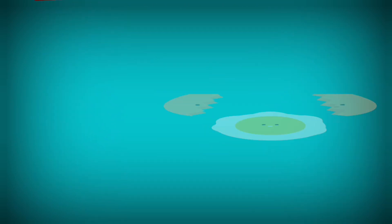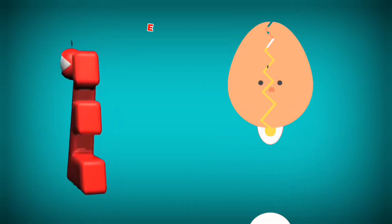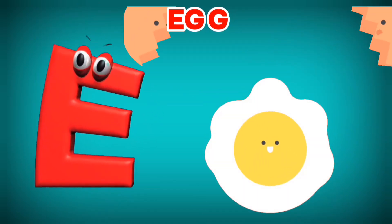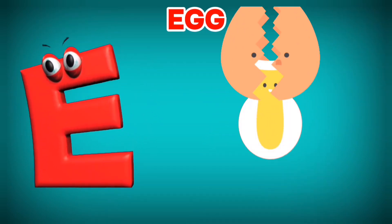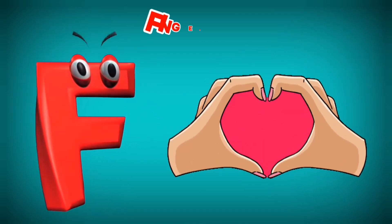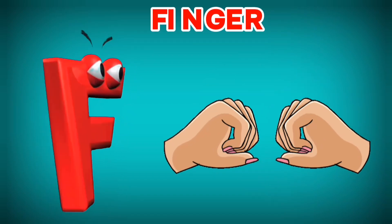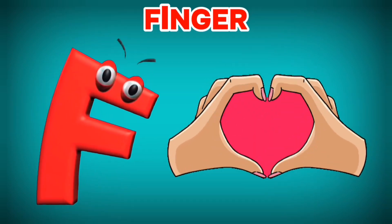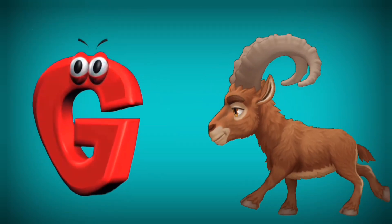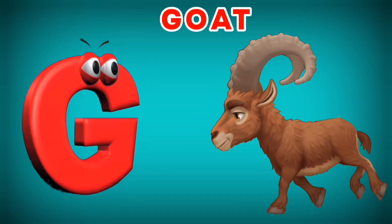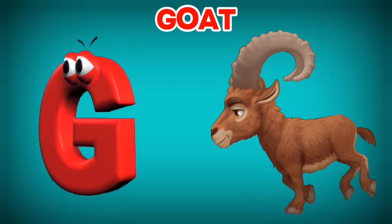E is for Egg. E, E. Egg. F is for Finger. F, F. Finger. G is for Goat. G, G. Goat.